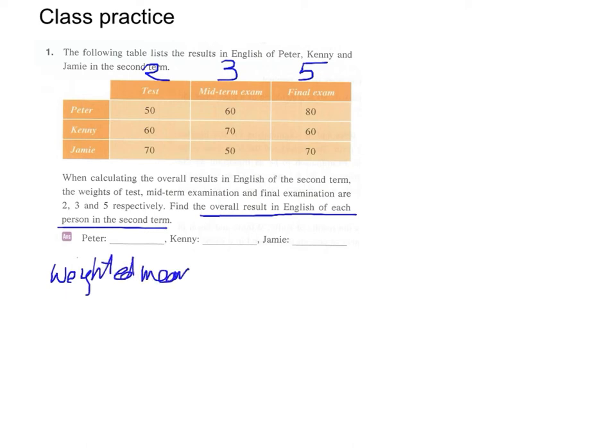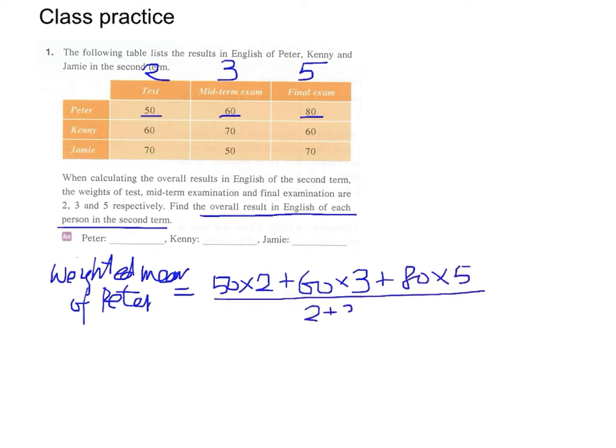Weighted mean of Peter. We multiply his marks by the corresponding weights. For example, the test mark is 50, multiplied by 2. And midterm exam 60 multiplied by 3. And then plus final exam mark 80 multiplied by 5. And then we divide this by the sum of all the weights. Using our calculator, we find the weighted mean is 68.